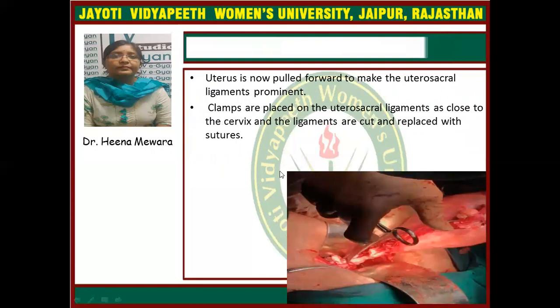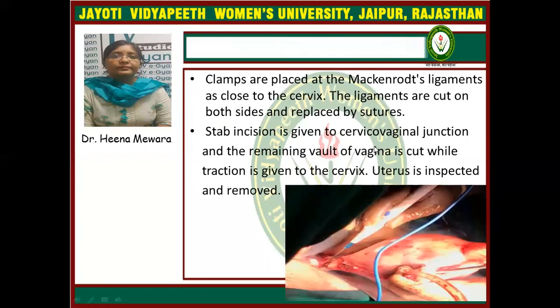The uterus is now pulled forward to make the uterosacral ligaments prominent. In the diagram, the uterus is pulled forward so the uterosacral ligaments are prominent. Clamps are placed on the uterosacral ligament as close to the cervix and the ligaments are cut and replaced by suture. After that, clamps are placed on the Mackenrodt ligament as close to the cervix. The ligaments are cut on both sides and replaced by suture.